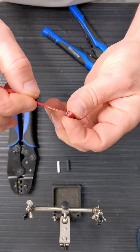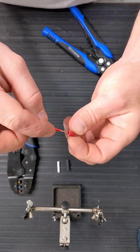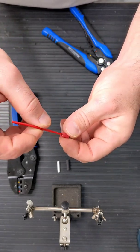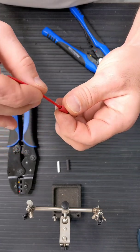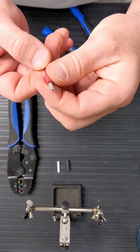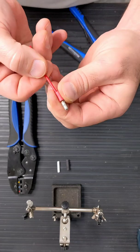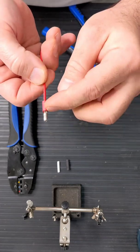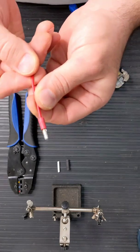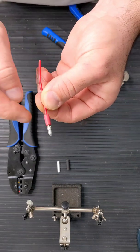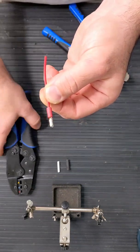You want to give it a light twist so it fits in there without bending the strands. You'll feel it when it hits the bottom, when the casing hits the end of the connector. Make sure you can see some of the copper wire, that it fully came through the connector.